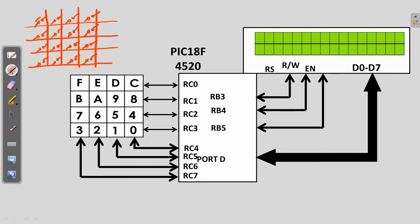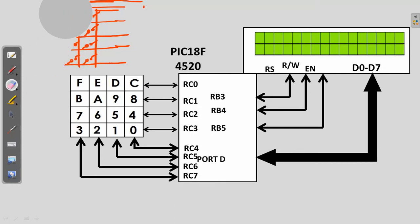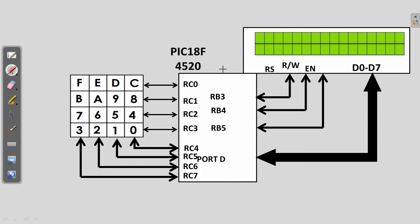When a switch is pressed, the connection takes place at that crossing point. Before that, no connection is present because the two points are open. We have 4 rows and 4 columns — those are the 8 connections. These 4 rows and 4 columns are combined to get 16 cross points where the keys are situated: 0, 1, 2, 3, 4, 5, 6, 7, 8, 9, A, B, C, D, E, F.